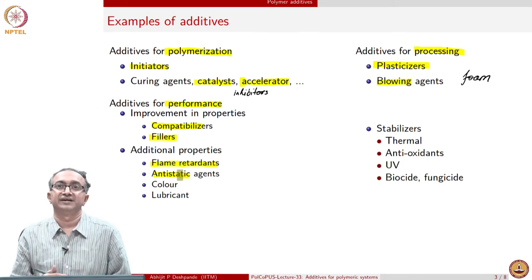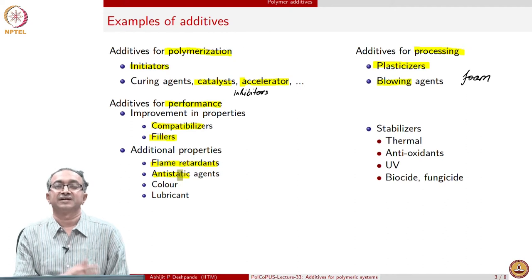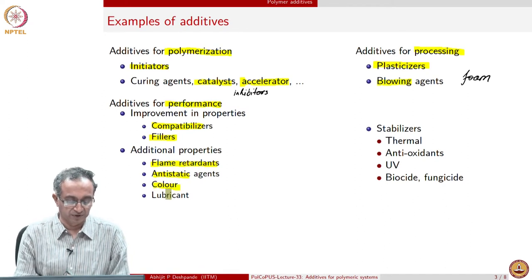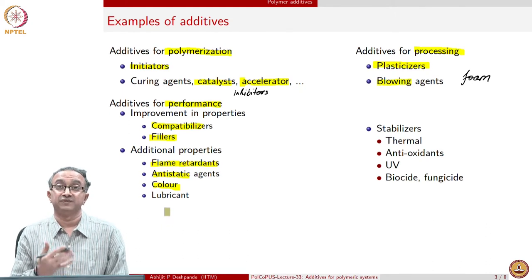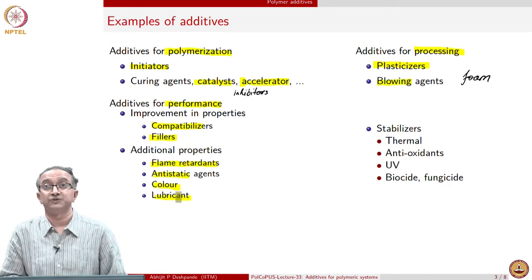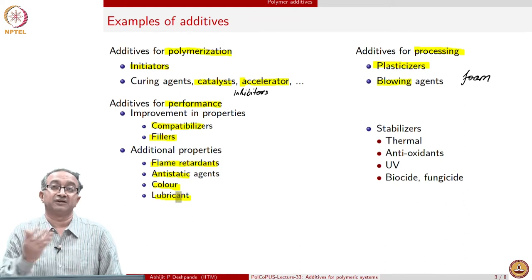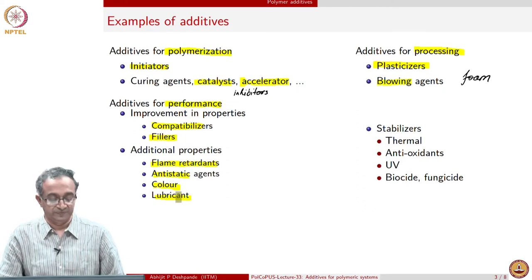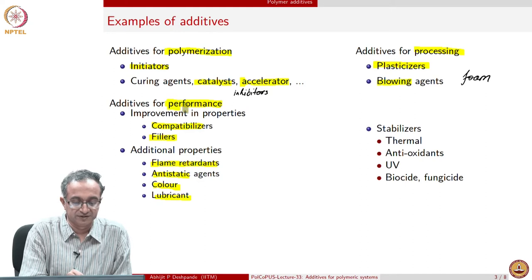Getting a shock from a door knob is usually a discomfort, so can we have door knobs where static does not accumulate? Anti-static additives prevent surface charges from accumulating. From an aesthetic point of view, colors are important, and sometimes color may be part of the performance of the material itself. Lubricants are also important — for example, Teflon and nylon components used in machines may require lubrication so that sliding of a polymeric material over metal or another polymer becomes easy. So surface properties of polymers can be modified to make them self-lubricating.